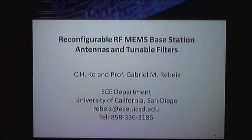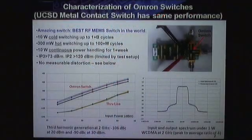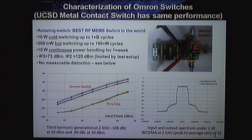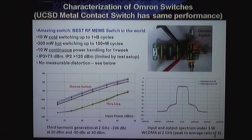Professor Rabais: I'll be talking about tunable systems in cell phones and base stations, supported partly by the center and partly by Nokia Siemens and Samsung. The first project is to build intelligent base stations. One way of making intelligent base stations is to have them scan patterns in elevation and produce several patterns simultaneously. For this we use the Omron switch — a Japanese sensor company that builds a great RF MEMS switch. This switch is incredibly linear: IP3 greater than 73 dBm, IP2 greater than 120 dBm, limited only by our test setup, handling up to 10 watts of continuous power.